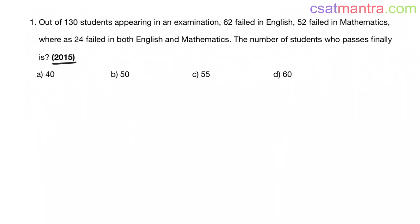This is a 2015 question. Out of 130 students appearing in an examination, 62 failed in English, 52 failed in Mathematics, whereas 24 failed in both English and Mathematics. The number of students who passes finally is.